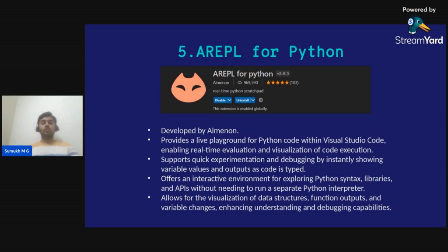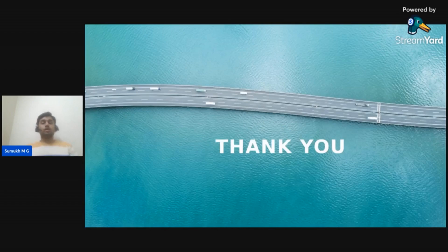These are the five most important extensions which every Python developer and data scientist must have. In conclusion, by leveraging the power of VS Code extensions you can revolutionize your data science workflows and unlock new levels of productivity and efficiency in Python development. Thank you all for joining this session and for giving me this opportunity.